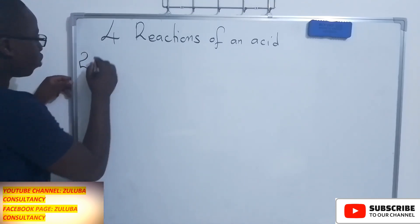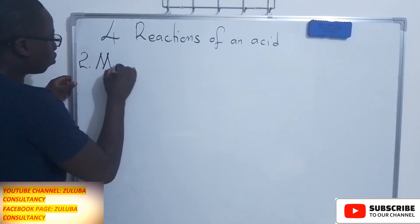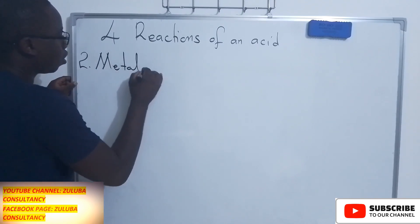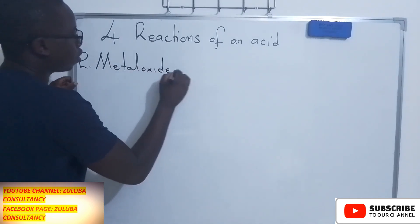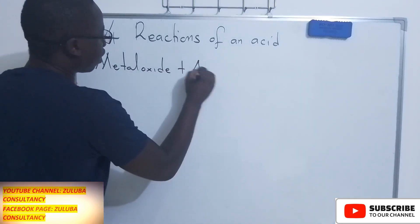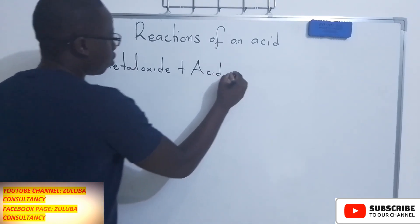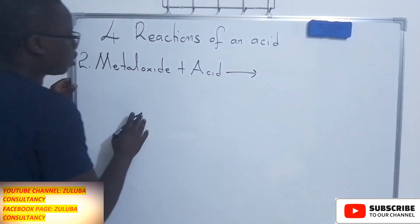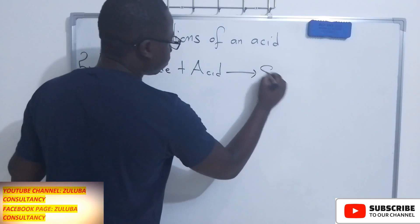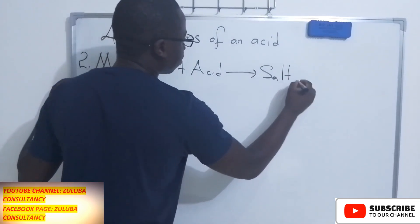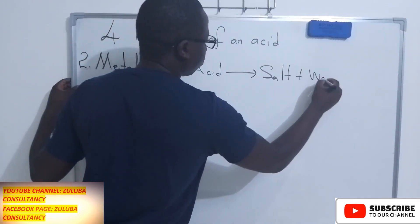The second reaction we want to look at is when a metal oxide reacts with an acid. When a metal oxide reacts with an acid, it always produces salt and water.